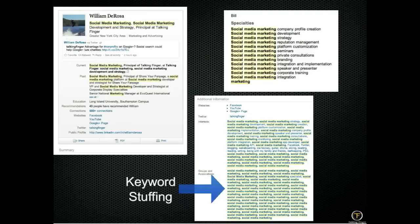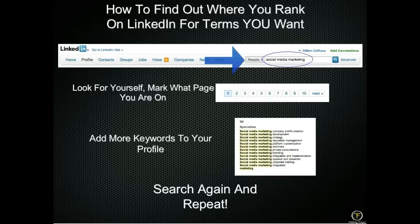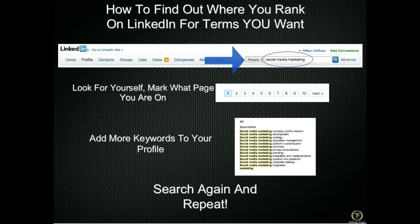To find out where you actually rank on LinkedIn for the terms you want: type your keyword — for example 'social media marketing' — into the people search and dig through the pages to see where you appear. Mark what page you're on. Then go back to your profile and add more keywords for that search term — just three or four more — and search again. LinkedIn updates almost instantly, so you can almost immediately see how you climb in the search rankings.